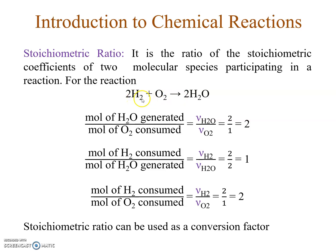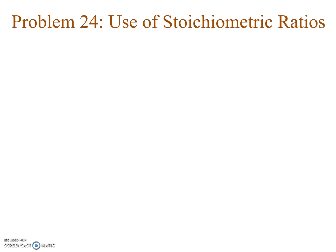From a balanced chemical reaction, you directly know that two moles of hydrogen react with one mole of oxygen to give two moles of water. The stoichiometric ratio is simply the ratio of the stoichiometric coefficients of two molecular species participating in a reaction. It can be used as a conversion factor — for each mole of hydrogen consumed, one mole of water is produced.